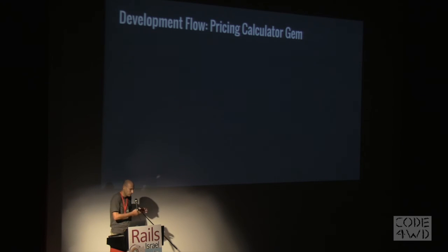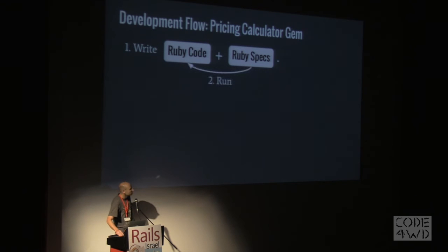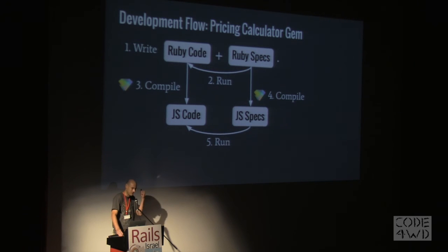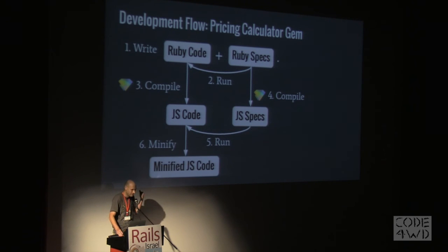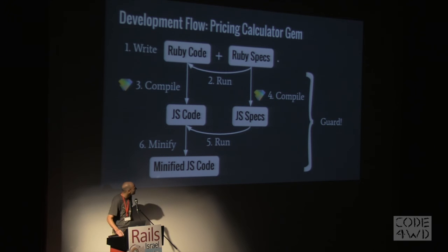The development flow: we moved this library into a gem called the pricing calculator gem. We write Ruby code and Ruby specs. We run the Ruby specs on the Ruby code. Then we use Opal to compile the Ruby code into JavaScript code. Then we use Opal to compile the Ruby specs into JavaScript specs, because Ruby specs are also Ruby. Then we run those JavaScript specs on the compiled JavaScript code. Finally, we do minifying to produce the minified JavaScript. This seems like a lot, but it all runs via Guard, so you basically just write your Ruby code, change it, and everything runs.